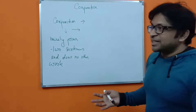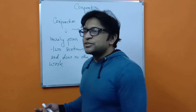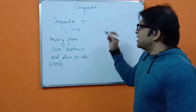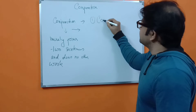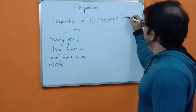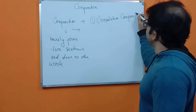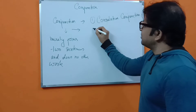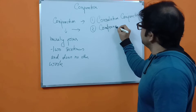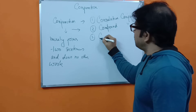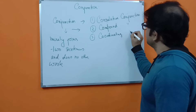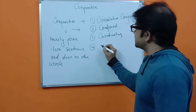Conjunctions can be classified into four different kinds: number one — correlative; number two — compound; number three — coordinating; number four — subordinating. You have to know all four of these types.